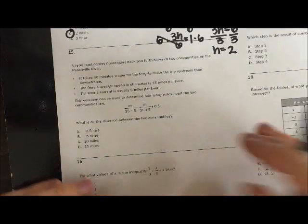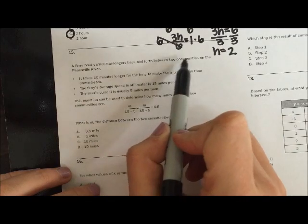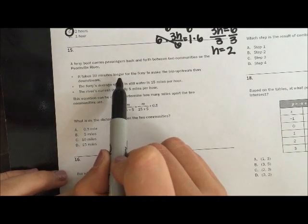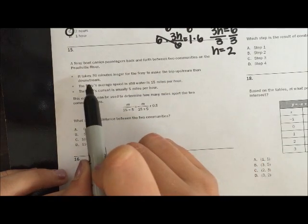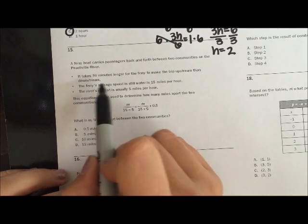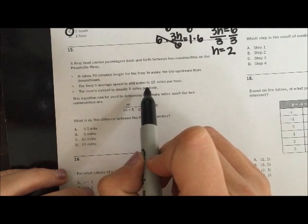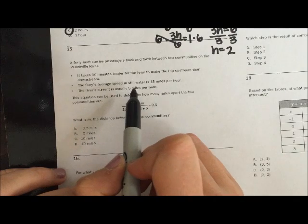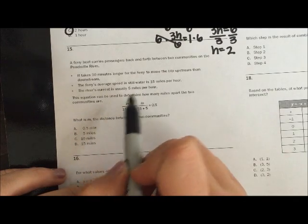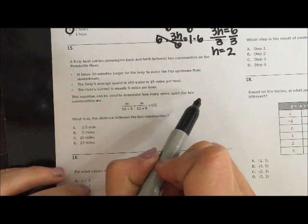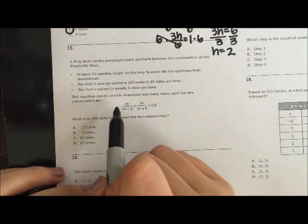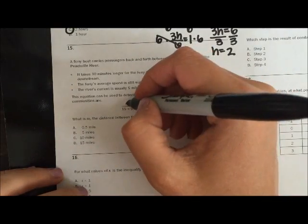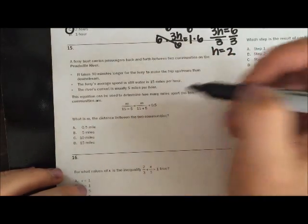So number 15. The ferry boat carries passengers back and forth between two communities on the Peachville River. It takes 30 minutes longer for the ferry to make the trip upstream than downstream. The ferry's average speed in still water is 15 miles per hour. The ferry's current is usually 5 miles per hour. This equation can be used to determine how many miles apart the two communities are. What is m? The distance between the two communities. So this is the variable we're solving for. So let's look at this equation. Is there something I can simplify?